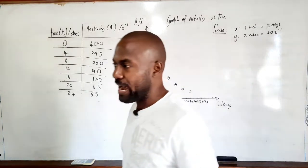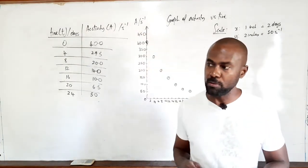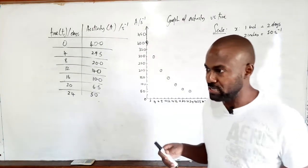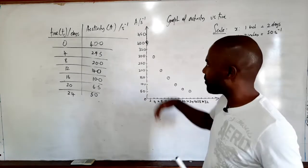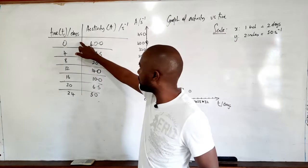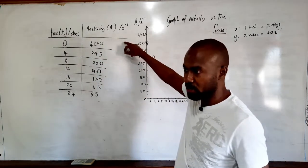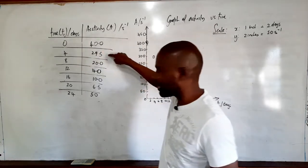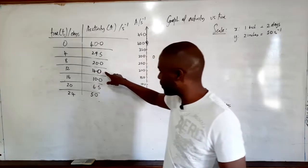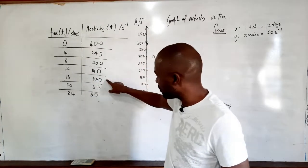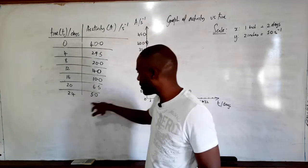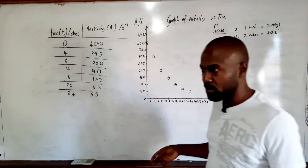The question says: the activity of a radioactive sample was measured over a 24-day period. The results are recorded in table 1. At t equals 0 days, the activity was 40.0 disintegrations per second. After 4 days: 29.5; 8 days: 20.0; 12 days: 14.0; 16 days: 10.0; 20 days: 6.5; and after 24 days, the activity was 5.0 disintegrations per second.